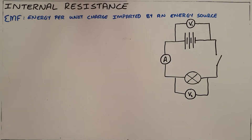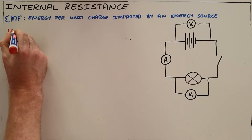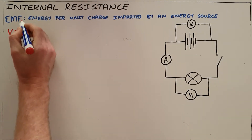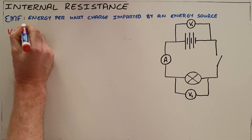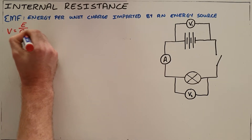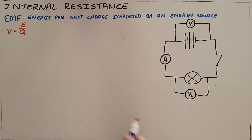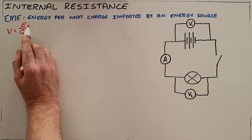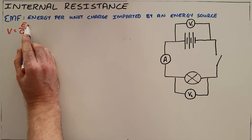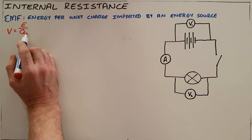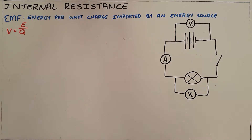In an introduction to electricity, it is safe to assume that batteries only provide energy and do not use any energy themselves. We can say that the potential difference of a battery is equal to the amount of energy that battery provides per coulomb of charge. So a 12-volt battery provides 12 joules of energy per coulomb of charge.